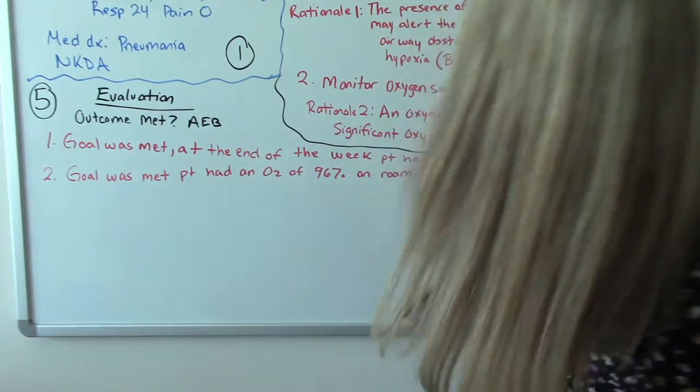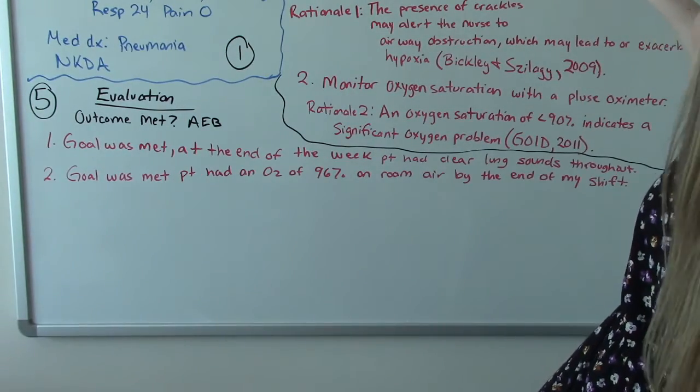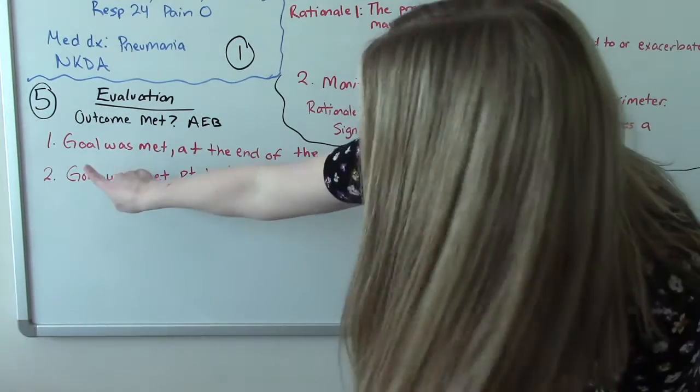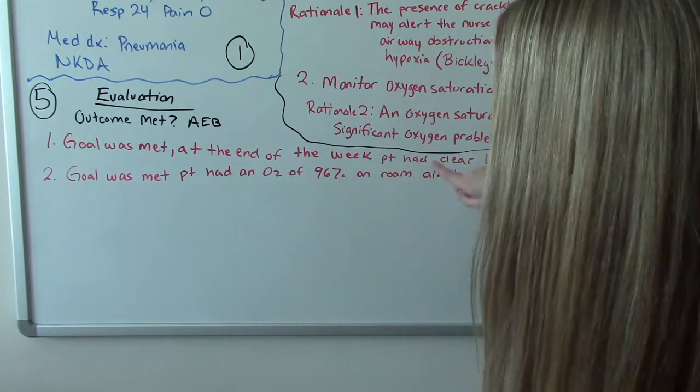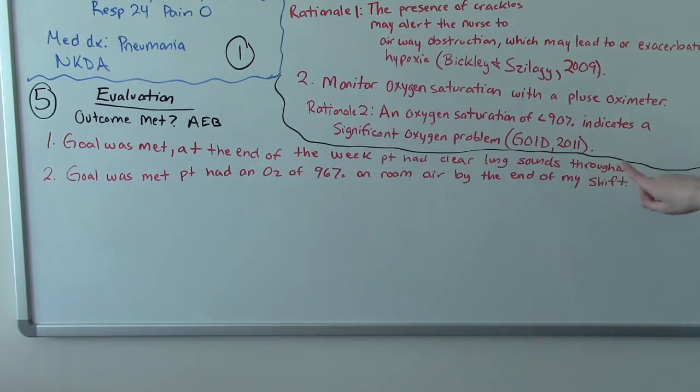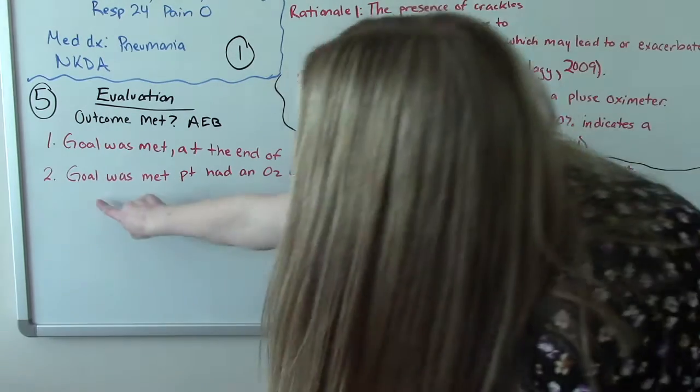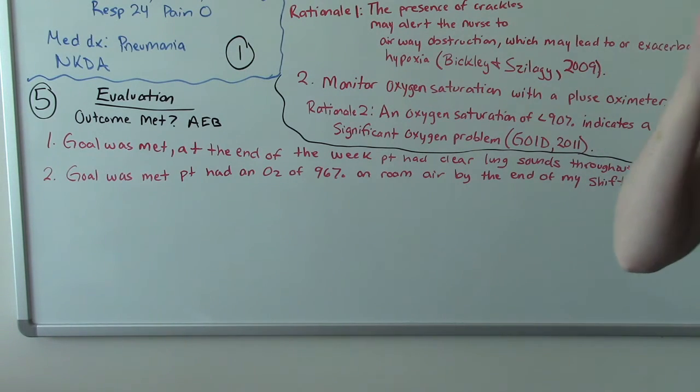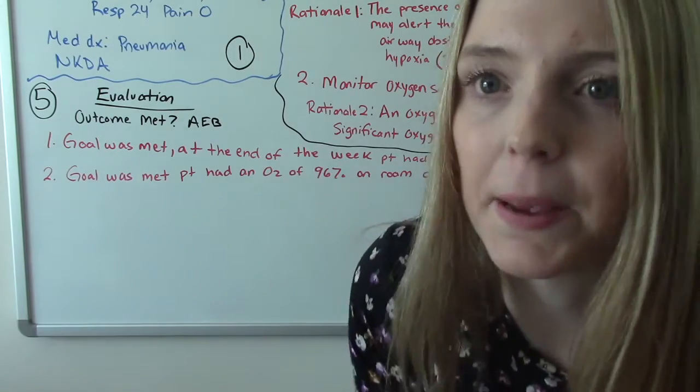So number one, remember our goal was to have clear lung sounds upon assessment within a week. So we can say yes, our goal is met. At the end of the week, patient had clear lung sounds throughout. Our second one was to have their O2 greater than 95 by the end of the shift. And we can say yes, goal was met. The patient had an O2 of 96%, because that would be our proof, on room air by the end of my shift. And again, you can kind of make it up because these patients aren't real.